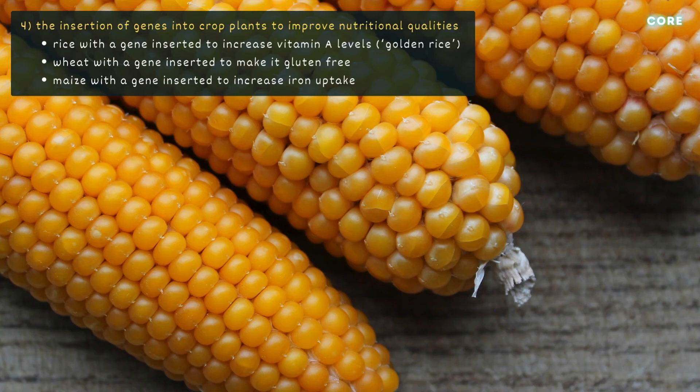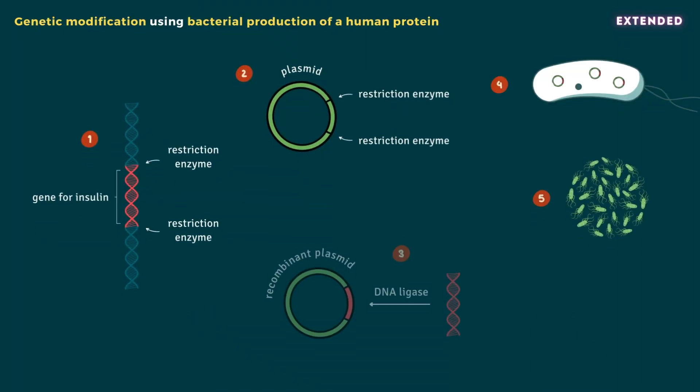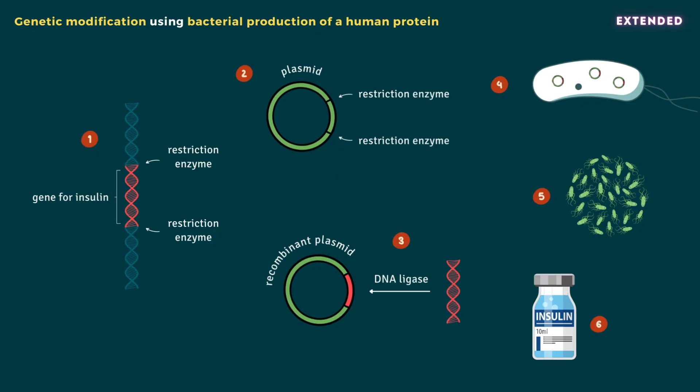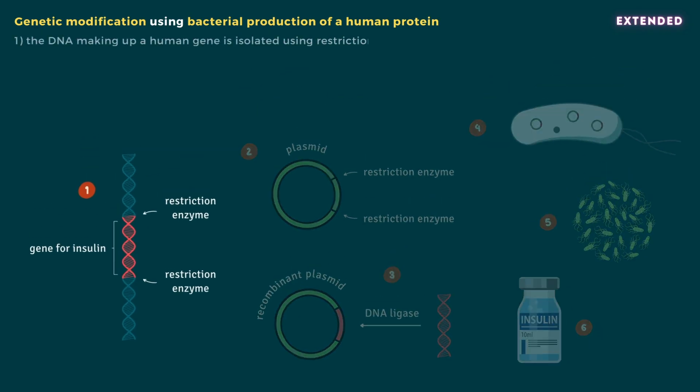That's everything you need to know for core, so we'll move on to the extended content. You need to be able to outline the process of genetic modification using bacterial production of a human protein like insulin as an example.